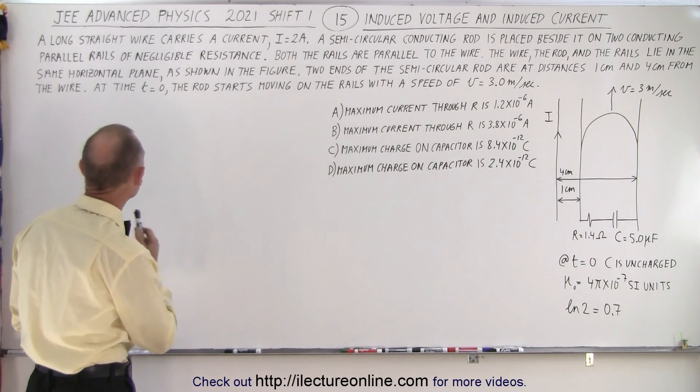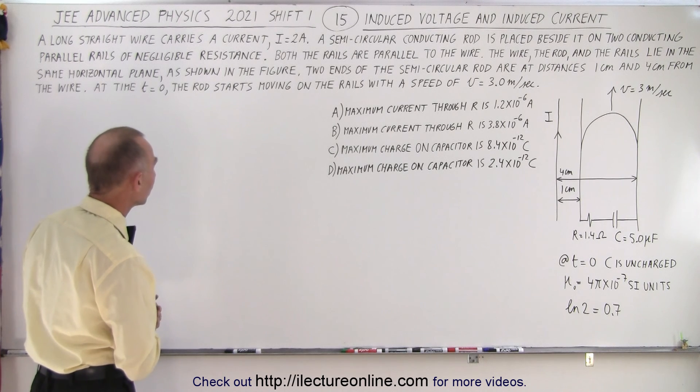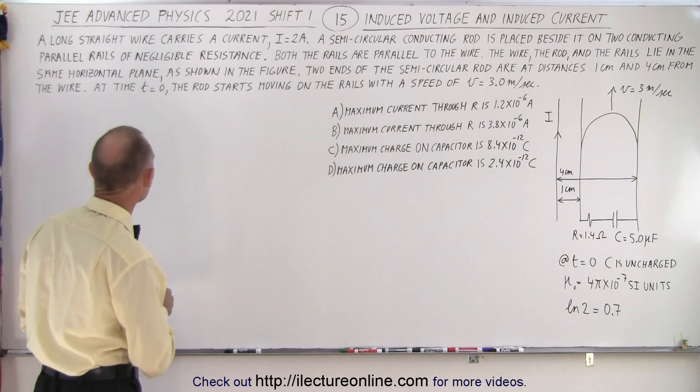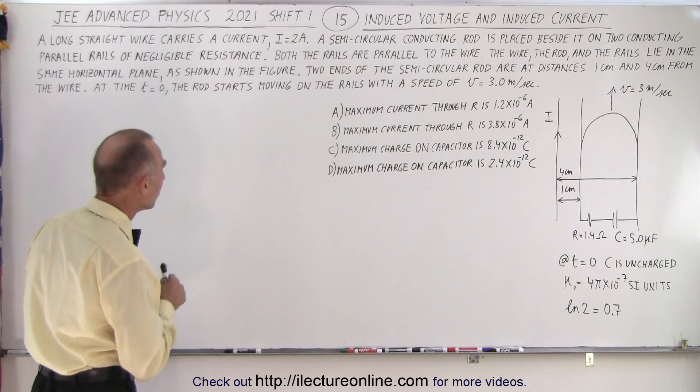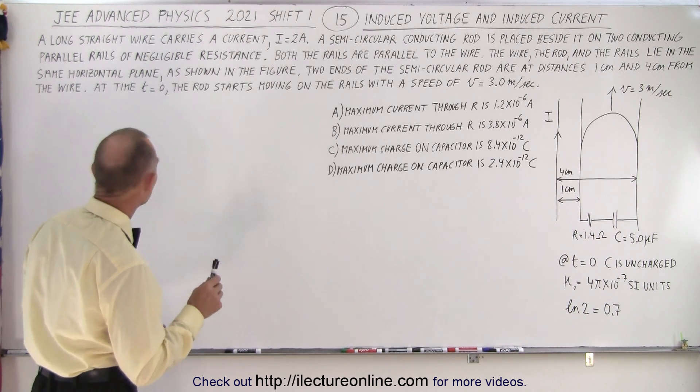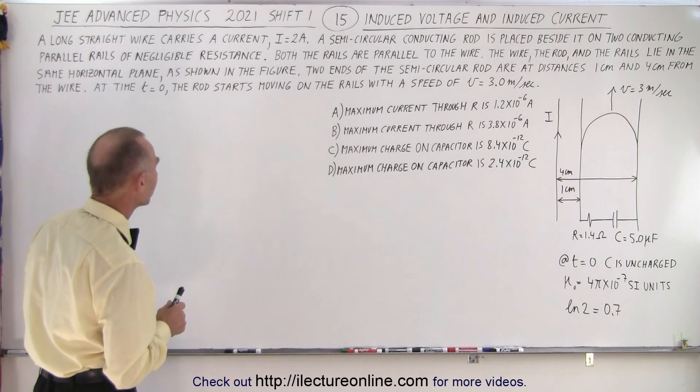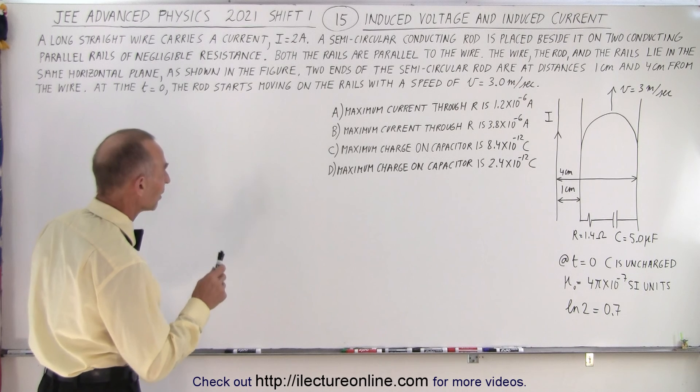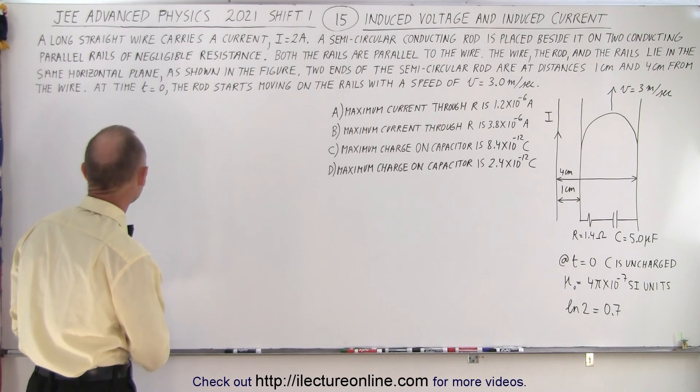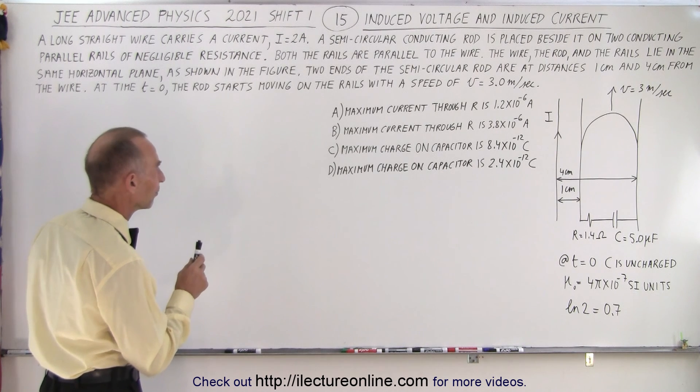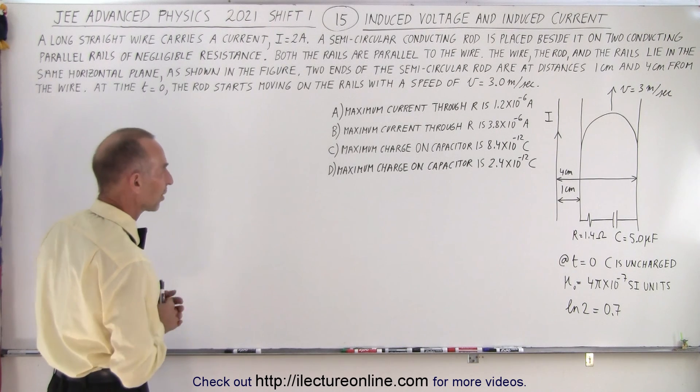So it says a long straight wire carries a current of 2 amps. A semicircular conducting rod is placed beside it on two conducting parallel rails of negligible resistance. Both the rails are parallel to the wire, and the rod and the rails lie in the same horizontal plane as shown in the figure. Two ends of the semicircular rod are at distances 1 cm and 4 cm from the wire. At time t equals 0, the rod starts moving on the rails with a speed of 3 meters per second.